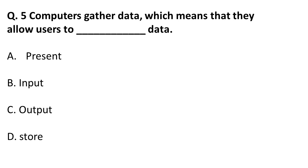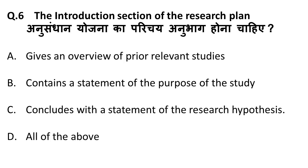The next question is: a computer gathers data, which means they allow the user to do what with data? A computer doesn't go from place to place to collect data — it simply receives input that we give it. So the answer is: computers gather data, which means they allow the user to input the data.